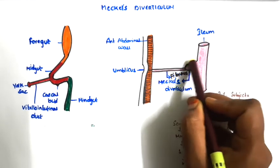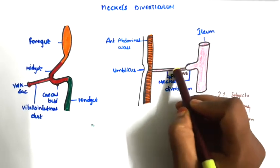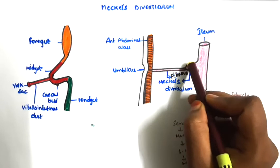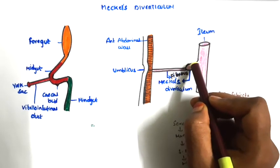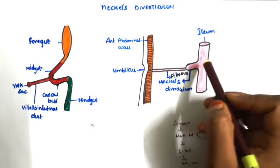This is the vitelline duct in fetal life. Usually it will obliterate in fetal life, but in some cases it will remain. The persistent proximal part of the vitelline duct is known as Meckel's Diverticulum.